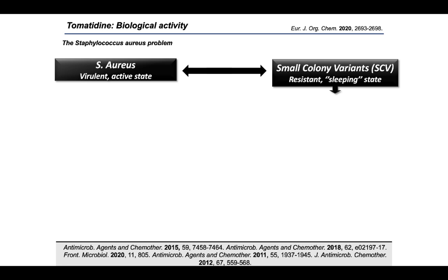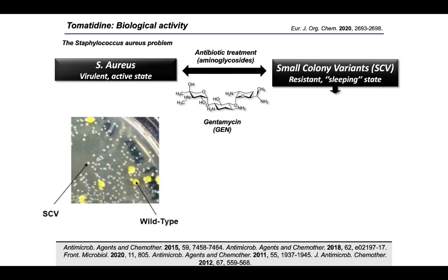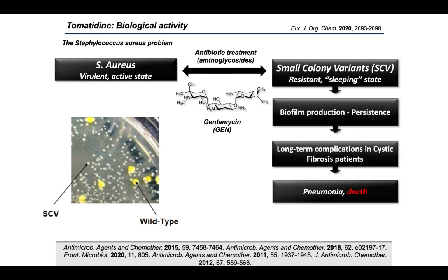Staph infections, once active, are virulent and difficult to treat. Treatment with aminoglycoside antibiotics such as gentamicin creates persistent mutations called small colony variants, which remain viable under aminoglycoside treatment. This is a reversible process: once the antibiotic treatment is stopped, the bacteria reverts to its wild-type strain, which is again virulent. Small colony variants are characterized by biofilm production, causing antibiotic persistence and immunity to aminoglycosides. These SCV infections can lead to long-term complications in cystic fibrosis patients, and in the worst case, pneumonia and death.